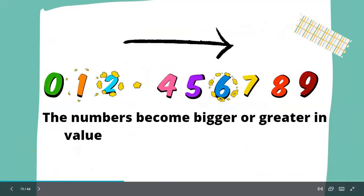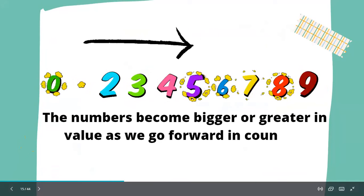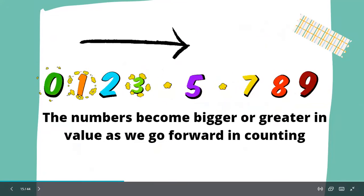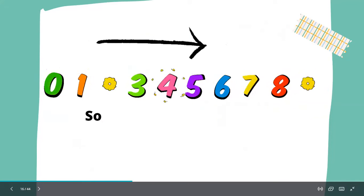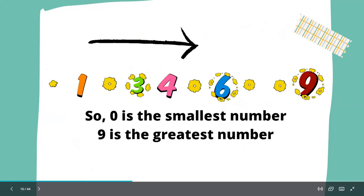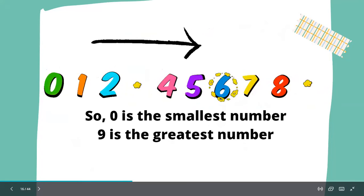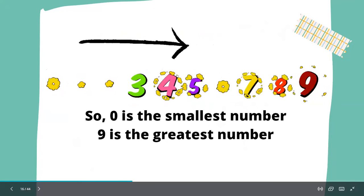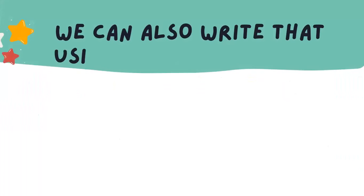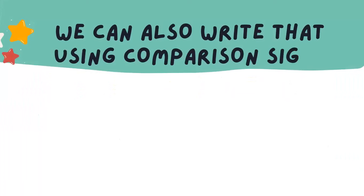The numbers become bigger or greater in value as we go forward in counting. So zero is the smallest number and nine is the greatest number. We can also write this using comparison signs. Do you know what comparison signs are? Let me show you.